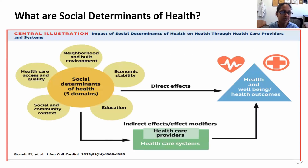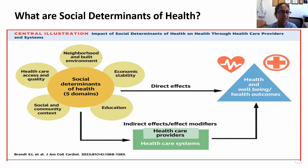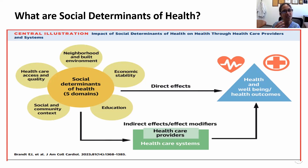When we think about disparities, we have to think about what are social determinants of health. This is a figure from a review article in the Journal of the American College of Cardiology, which talks about the five domains: neighborhood and built environment, economic stability, education, social and community context, and healthcare access and quality — and how these have direct and indirect effects on health outcomes. As I proceed, think about these factors through the lens of the social determinants of health.